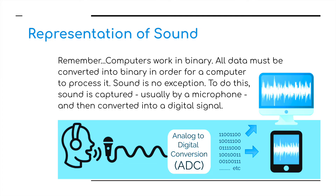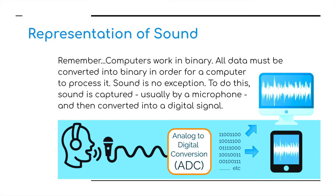Each sound wave has a frequency, a wavelength and an amplitude. The amplitude specifies the loudness of the sound. Sound waves vary continuously, which means that sound is analog. Computers cannot work with analog data so sound waves need to be sampled in order to be stored in a computer. Sampling means measuring the amplitude of a sound wave. This is done using an analog to digital converter, or ADC.